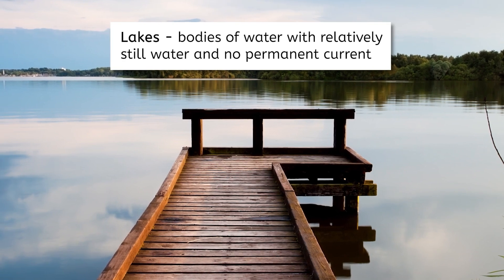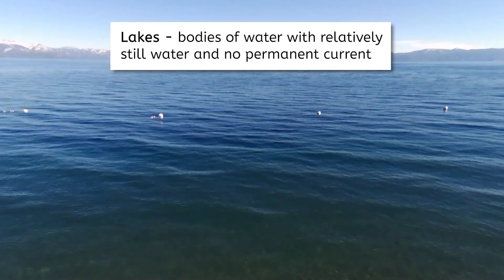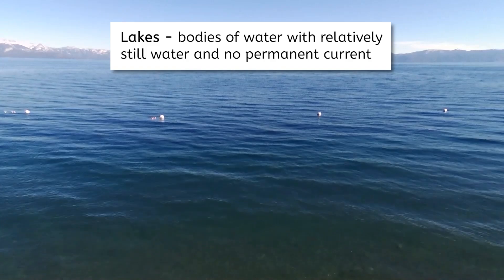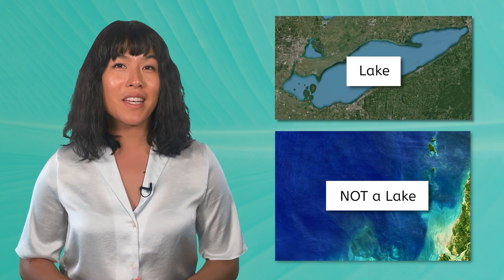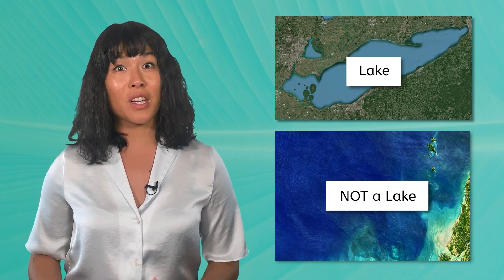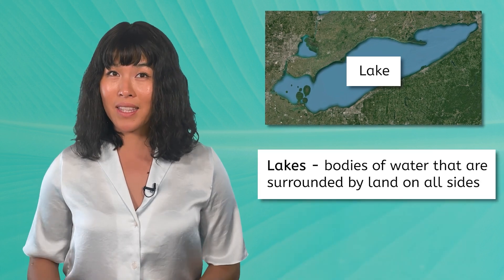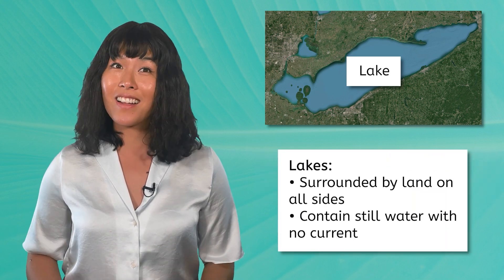The lakes contain still water and have no significant or permanent current. Of course, you may sometimes see a small current or waves in lakes, but these are driven by the wind and change with its direction. But there's one more rule a body of water must follow to be a lake. See if you can tell what the rule is by looking at these two examples. Why does one show a lake while the other does not? Lakes must be surrounded on all sides by land. The oceans don't meet either of our rules, so we can safely say that the oceans are NOT lakes.